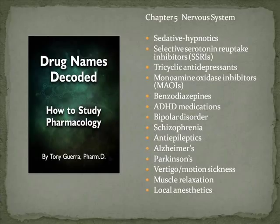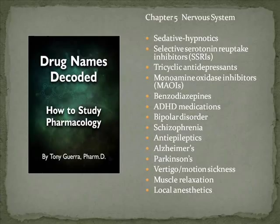Welcome to the Drug Names Decoded updated How to Study Pharmacology video section. This is meant to augment the book, not replace it. The main focus is pronunciation and a couple of tips and tricks to help you remember some of these medications. Chapter 5, the nervous system, is a big chapter. There are a lot of drugs here, and hopefully by grouping them it'll be a lot easier to remember what they're for.